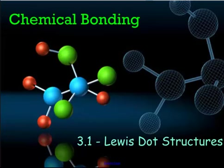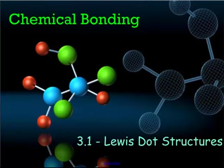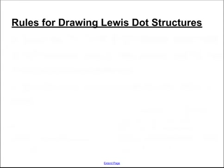This is chemical bonding. We're in a new chapter — 3.1 Lewis dot structures. We're going to get right to it. We've got a bunch of rules for drawing Lewis dot structures, and you want to be able to do these rules every single time.